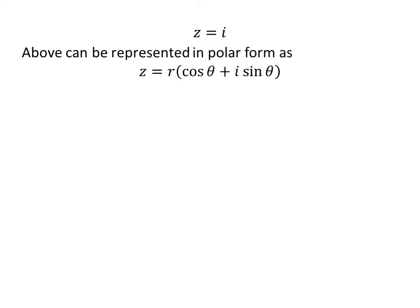The complex number z can be represented in polar form as r(cos θ + i sin θ). Here, r equals the modulus of z, and r cos θ equals 0, and r sin θ equals 1.